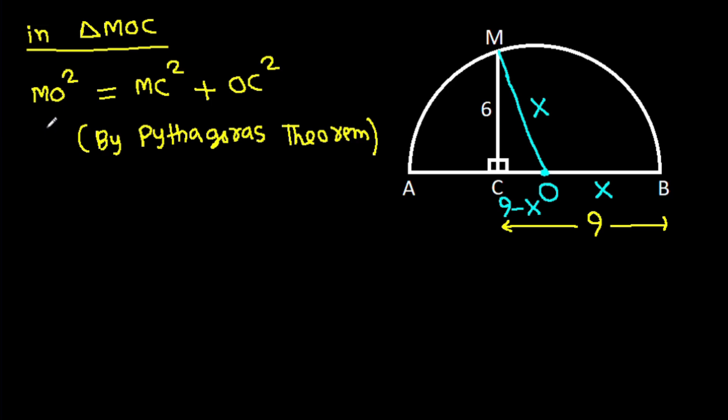And MO is X squared, and MC is 6 squared, minus OC is 9 minus X squared.